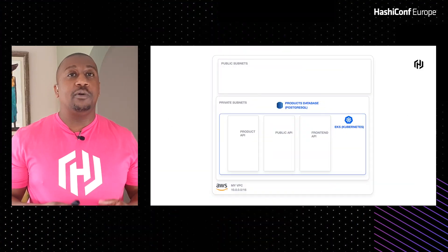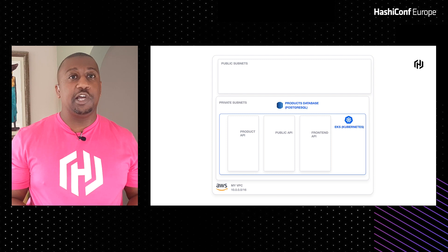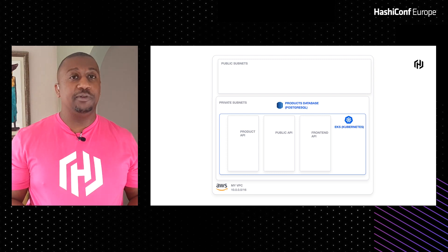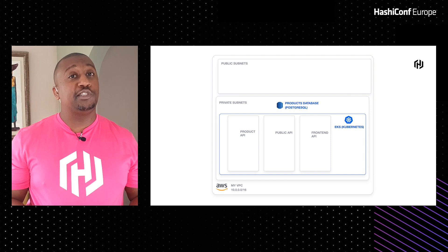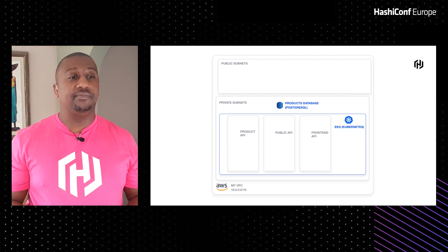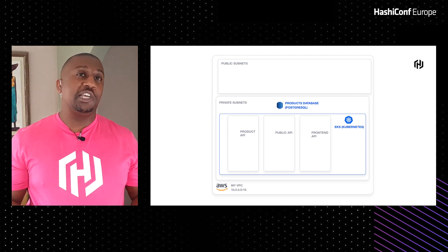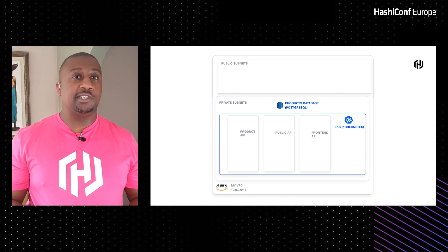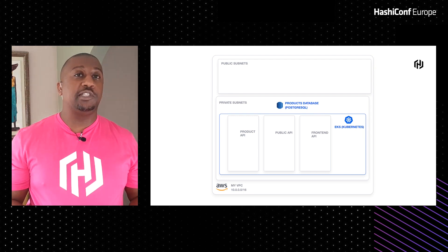Here we have our demo application which is called HashiCorp and it's built in AWS. It's a very common application architecture. We have a VPC which contains two subnets: a public subnet and a private subnet. All the action is happening in the private subnet, which contains a PostgreSQL database as well as an EKS cluster with three nodes, each running an API service.